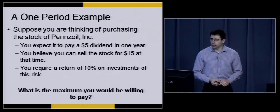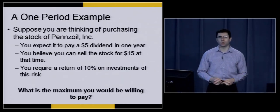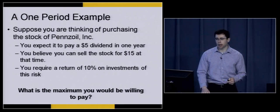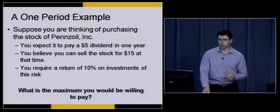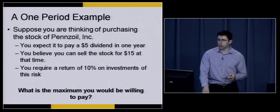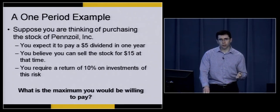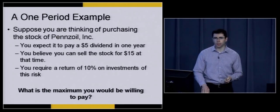Let's take a look at how we actually value a stock using the time value of money formula and the discounted cash flows method. Suppose you're thinking of purchasing the stock of Pennzoil, and you expect it to pay a $5 dividend in one year. You believe you can sell the stock for $15 at that point in time — one year from now. And for all investments, you require a 10% return on your investment. What's the maximum you should be willing to pay?